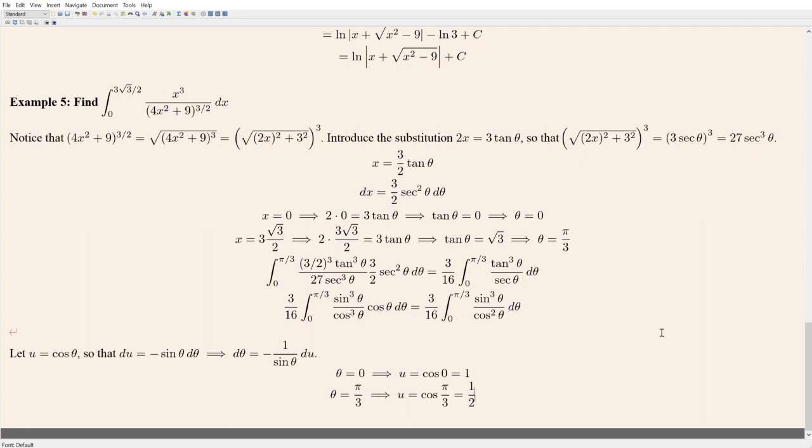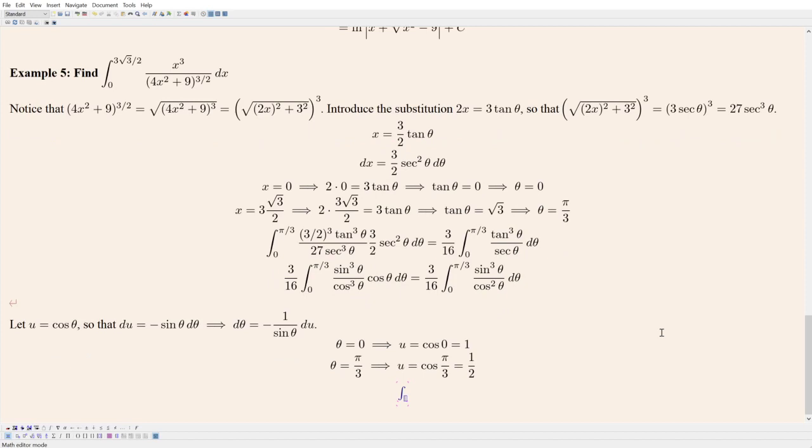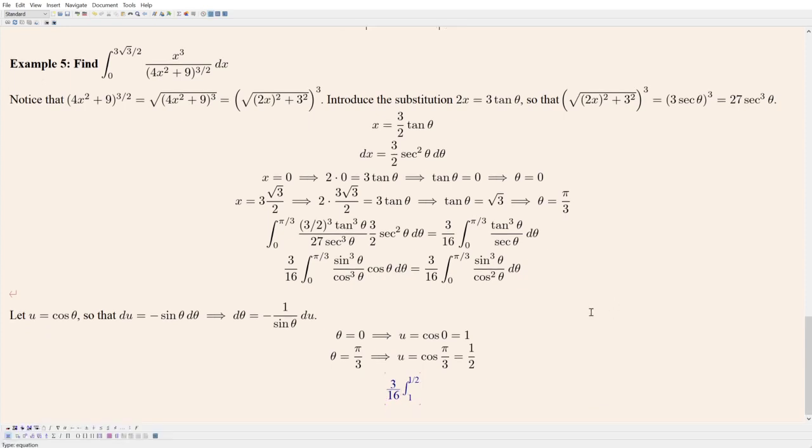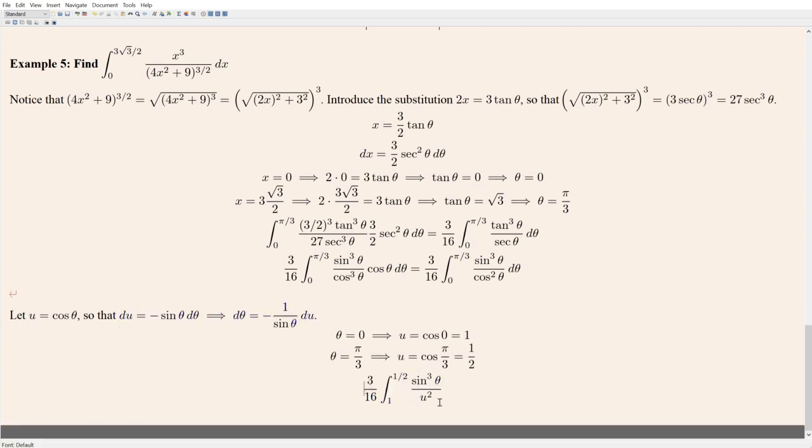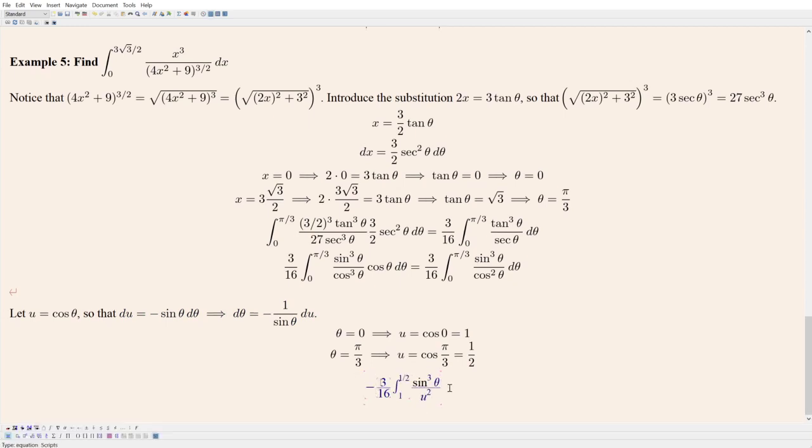Our integral becomes: the new bounds are from one to one half, we still got that three sixteenths hanging out in the front, sine cubed of theta over cosine squared - but now cosine is being called u, so that's u squared. And then instead of d theta, I write all of this. I'm going to bring that minus sign out front.